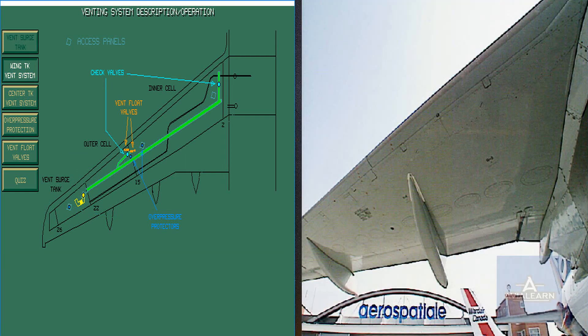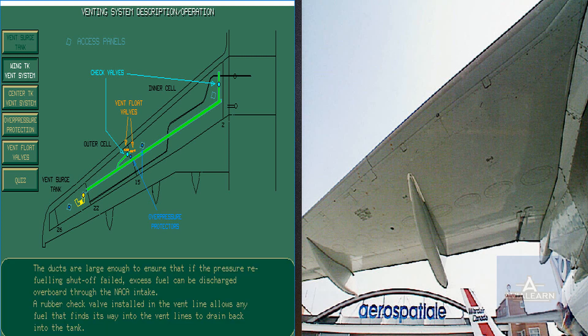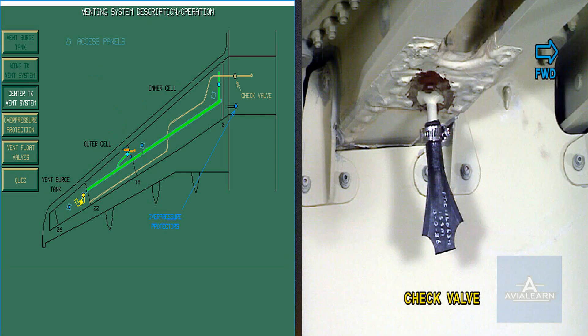Each wing tank inner and outer cells vent to the related vent surge tank. The vent lines are fitted with a vent float valve. The center tank vents into the left-hand vent surge tank.